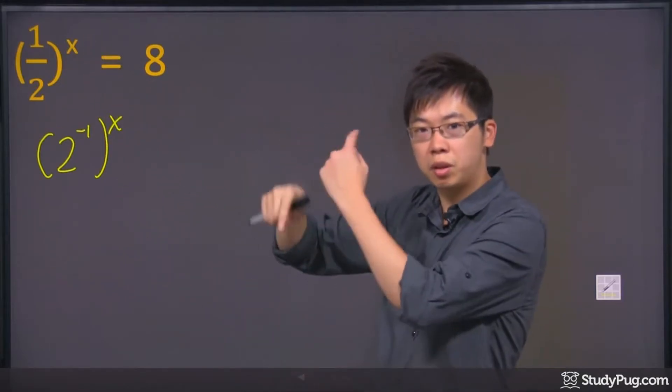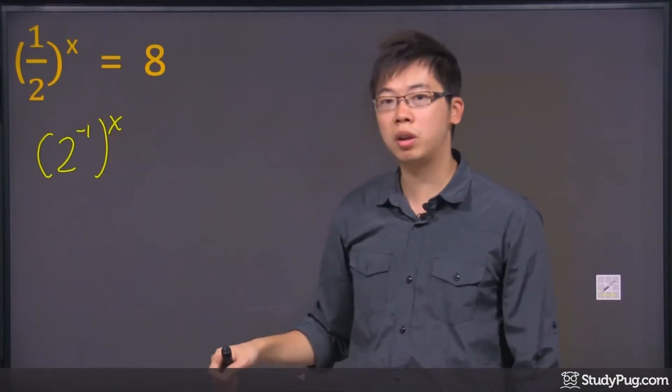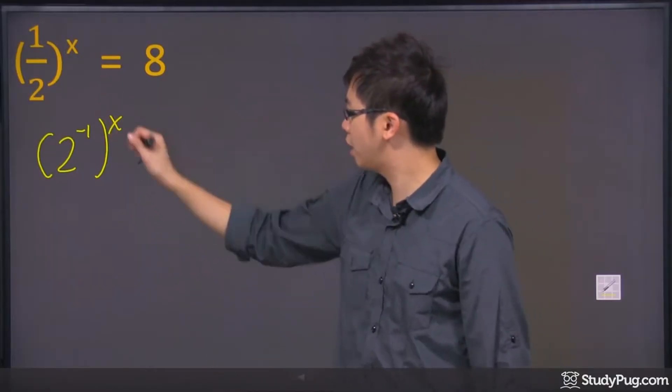We flip it over. So you're going to flip the numbers over, you put a negative 1 on the top as an exponent. The x is still there.